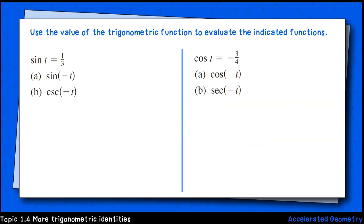Let's use these concepts in a couple of examples. On the left, we are given sin(t) = 1/3. From there, we're asked to find sin(-t). Using our identity, sine is an odd function. We know that sin(-t) = -sin(t). So that will be -1/3 for part a.